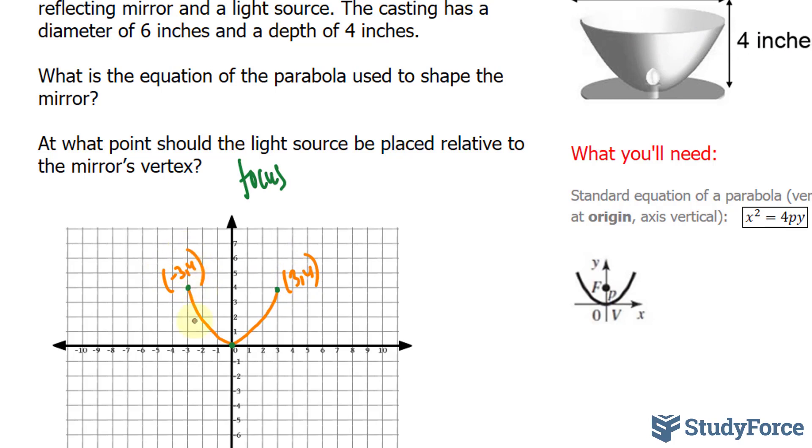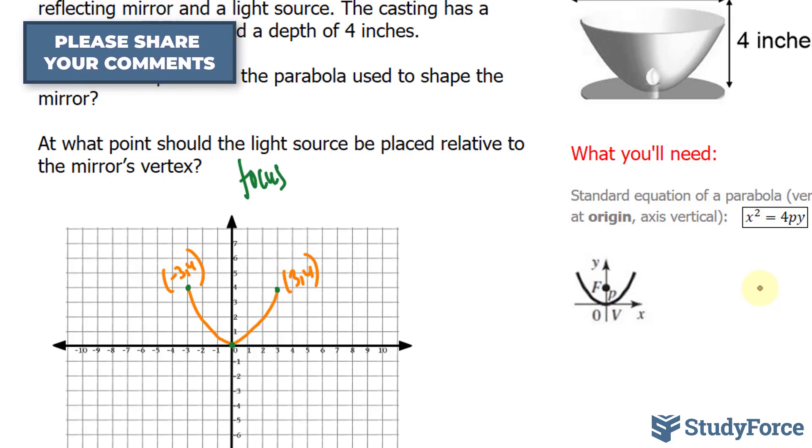To find the focus of where we should place this light source, we'll be using the following formula where we have x² = 4py and p represents, in our case, the y coordinate of the focus.